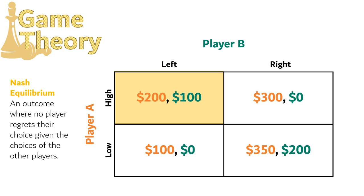If player A chooses low and player B chooses left, both players will regret their choice. Player A would have rather picked high and gotten $200 instead of $100, and player B would have rather chosen right and gotten $200 instead of $0. So that is not a Nash Equilibrium either. That leaves us with player A choosing low and player B choosing right. Neither player regrets their choice here — $350 is better than the $300 player A would have gotten choosing high, and $200 is better than the $0 player B would have gotten playing left. So now this would also be a Nash Equilibrium.